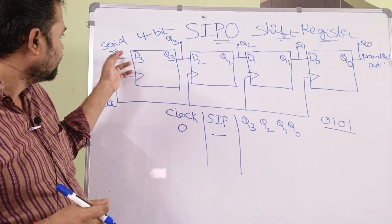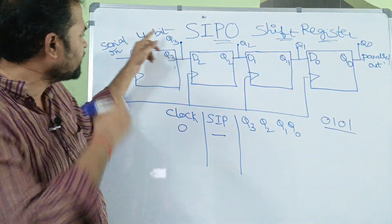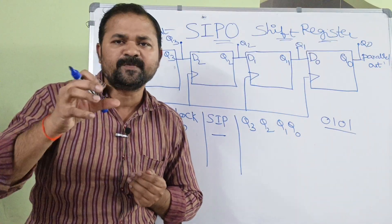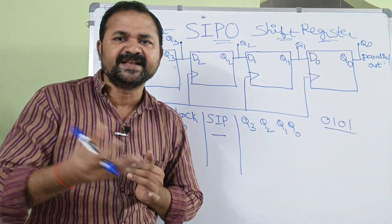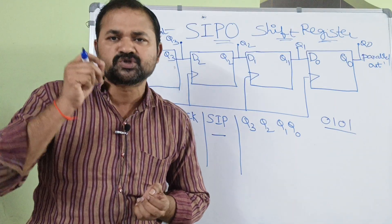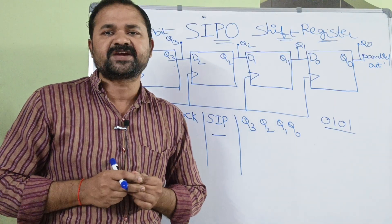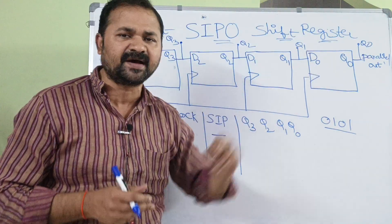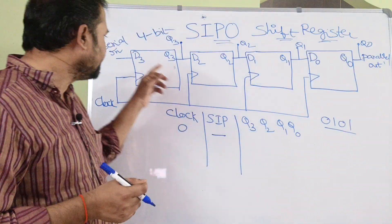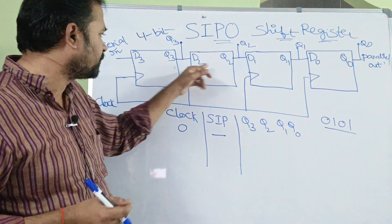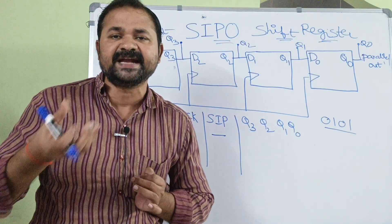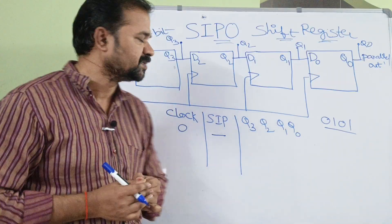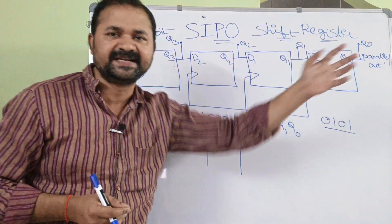This is the diagram for a 4-bit SIPO shift register. 4-bit means the size of the register is 4 bits. In order to store each bit, we require a flip-flop, so totally 4 flip-flops are taken. Here, this is a D flip-flop. D means data flip-flop; by using D flip-flop, we can store the data.